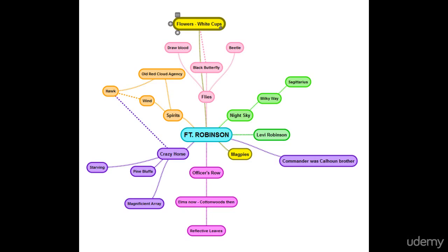The article I'm working on is about Fort Robinson, Nebraska. Fort Robinson is the place where the Lakota warrior Crazy Horse surrendered, and the place where he was also killed. Today, the state of Nebraska runs Fort Robinson as a state-run historic site, and they rent out what were the old officers' quarters on the parade ground, as well as the enlisted men's barracks, as a place for people to come stay.